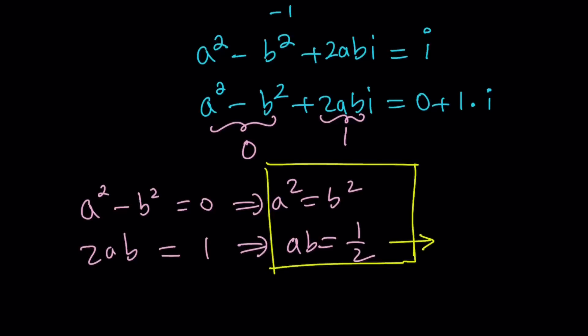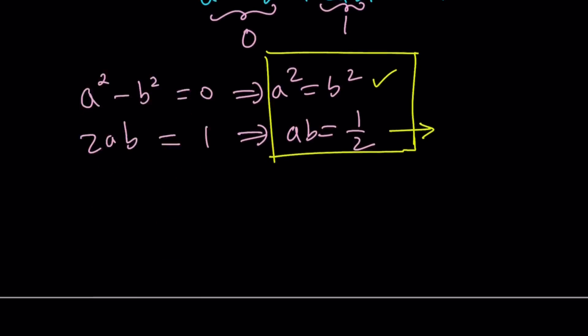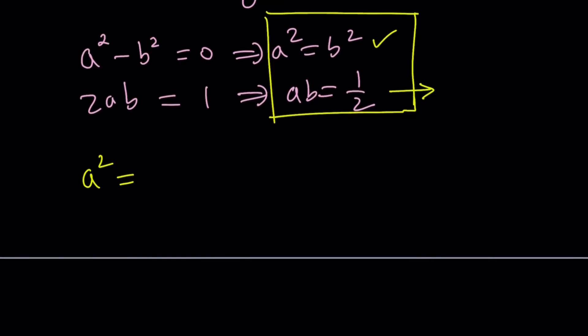So here's what I'm going to do. I'm going to work with the first equation first. a squared equals b squared has two different consequences. Either a is equal to b or a is equal to negative b. Right? If two numbers are opposite, their squares are equal. That's why when you square both sides in an equation, you may get extraneous solutions.